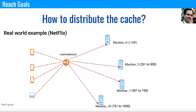All of a sudden you find that Machine 7 is getting heavily loaded — Machine 7 might be having a popular movie at a given point in time. A lot of people want to see the same movie, so all the hits go to Machine 7, which holds movies with IDs from 501 to 750. So now we have to add one more machine.